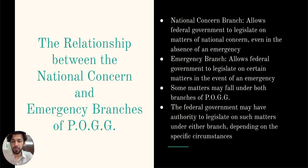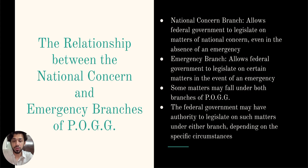This temporary jurisdiction operates as a partial and temporary alteration of the distribution of powers between the federal parliament and the provincial legislatures. It is possible for a matter to fall under both the national concern and emergency branches of the POG. For example, a matter that has acquired national dimensions and is also related to an emergency could be subject to federal legislation under both branches. In such cases, the federal government may have the authority to legislate under either branch, depending on the specific circumstances.